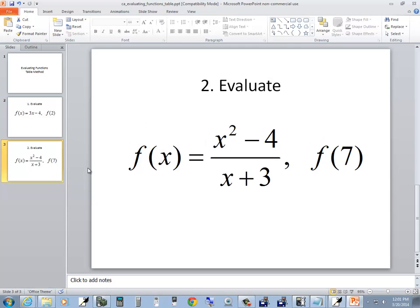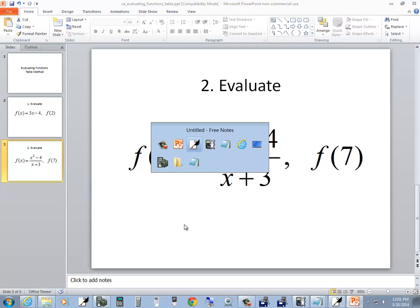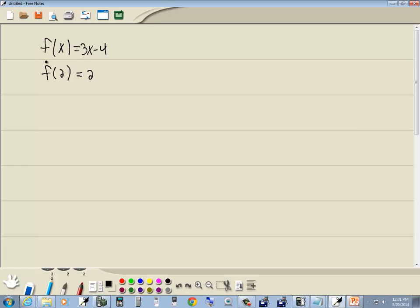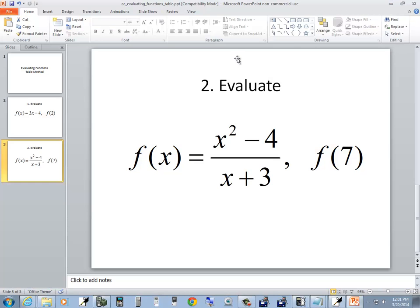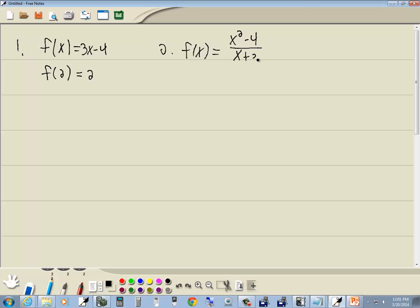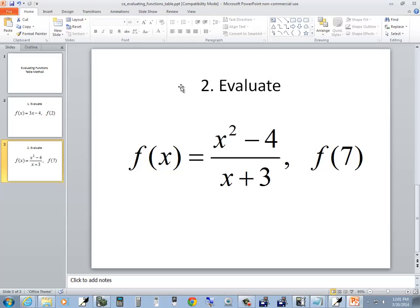Let's look at our second one. Our second one is f of x is equal to x squared minus 4 over x plus 3, and we want to find f of 7.